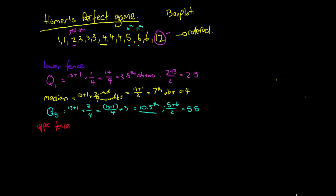The next thing we need to work out is the IQR. Our IQR is equal to our third quartile minus our first quartile. Our third quartile was 5.5 and our first quartile was 2.5. So our IQR is going to be 5.5 minus 2.5, which equals 3.